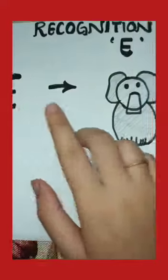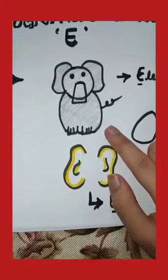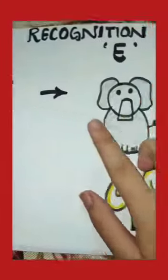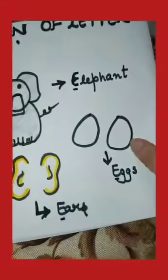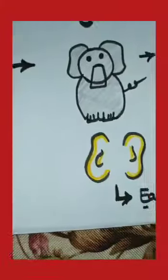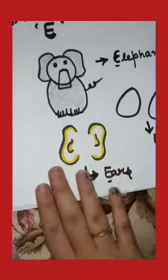So what we have understood? This is letter E. E for elephant means haathi. E for eggs means unday. E for ears means kaan. So this is letter E and these are the objects of letter E.